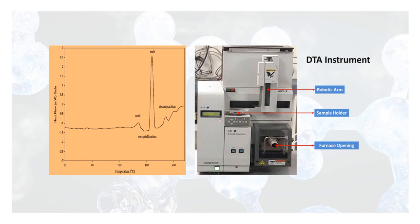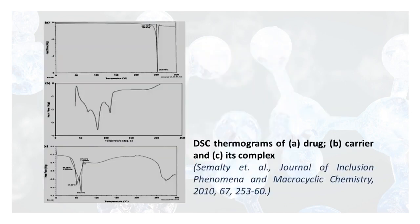Thermal analysis gives a lot more information than just the melting point. In this particular example, the first thermogram is the DSC of the drug, which shows a clear endothermic peak that was found to be shifted in the case of its complex. The bottom thermogram shows this with another carrier. It is visible that the complex shows unique peaks unlike the drug and carrier alone.